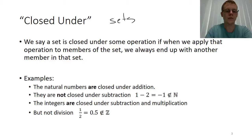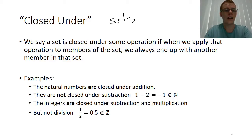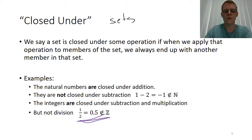Another couple of examples: the integers — the positive and negative integers — they are closed under subtraction and multiplication as well. But they are not closed under division, because when we divide, sometimes we end up with a value that is not part of the original set of integers.